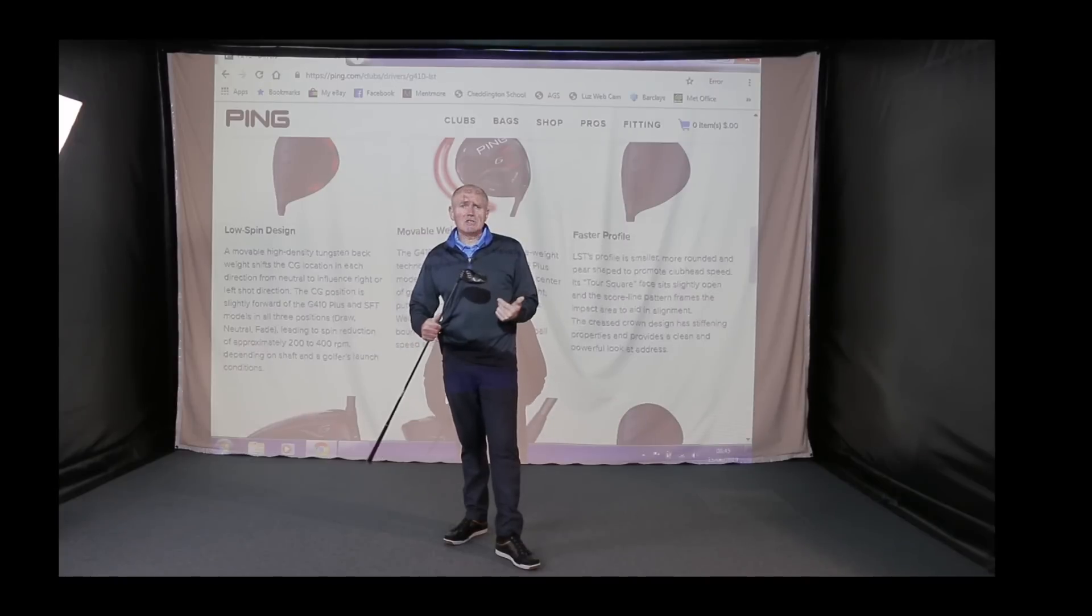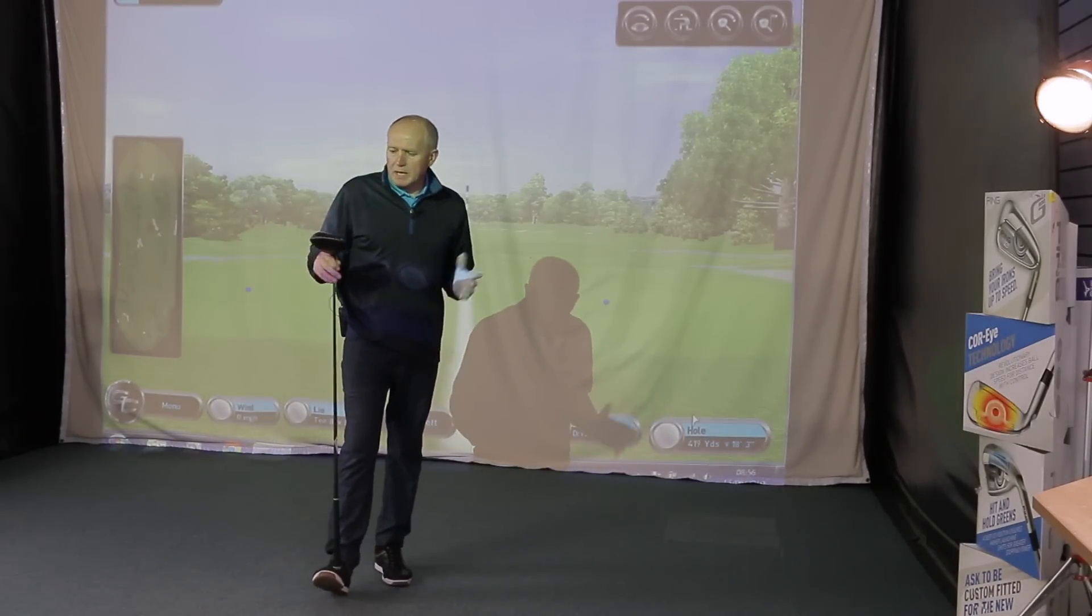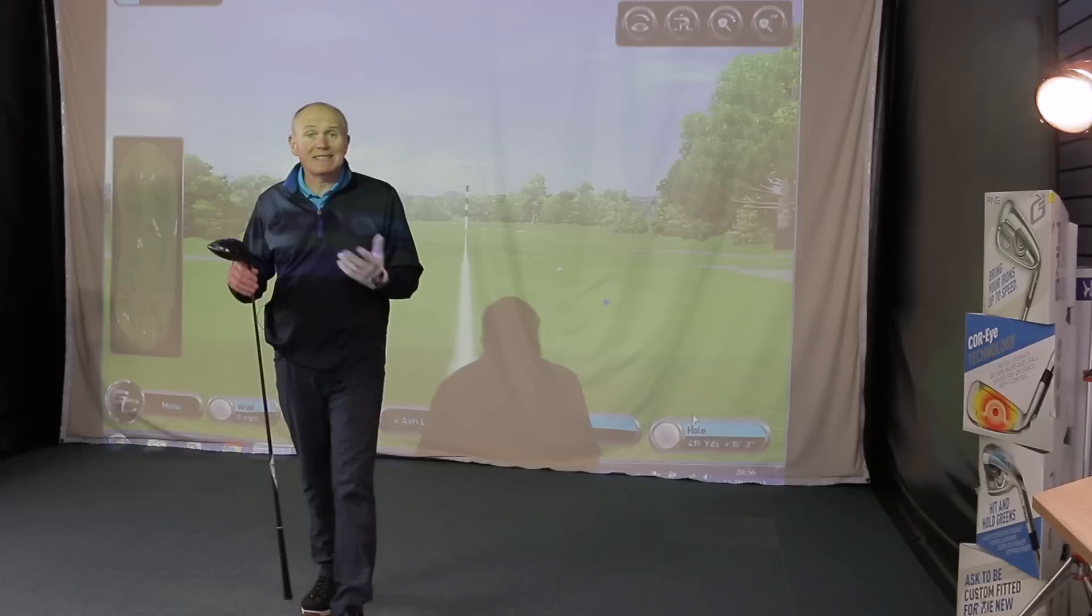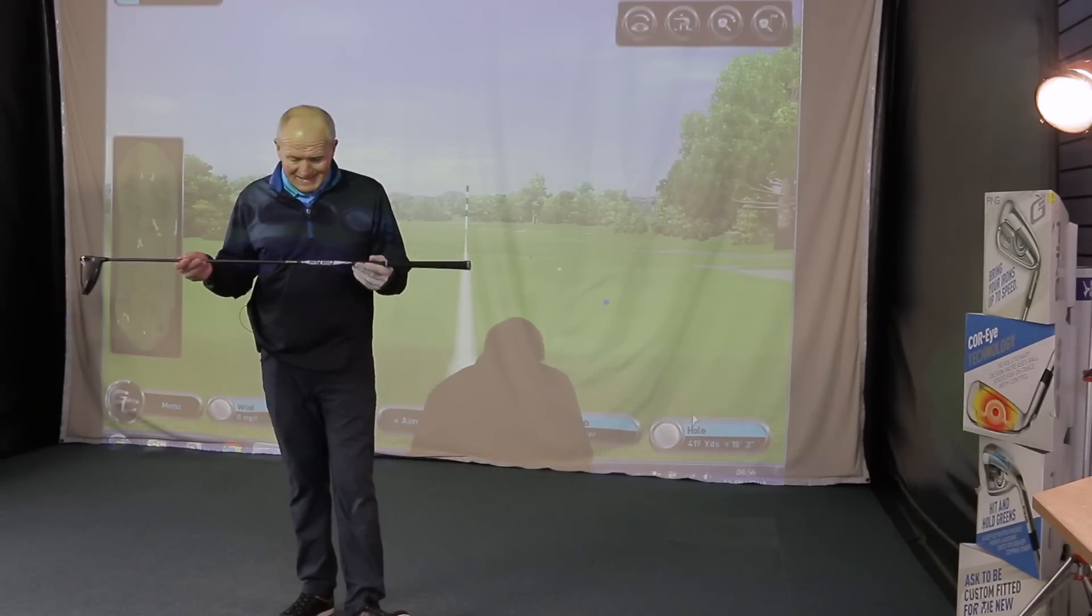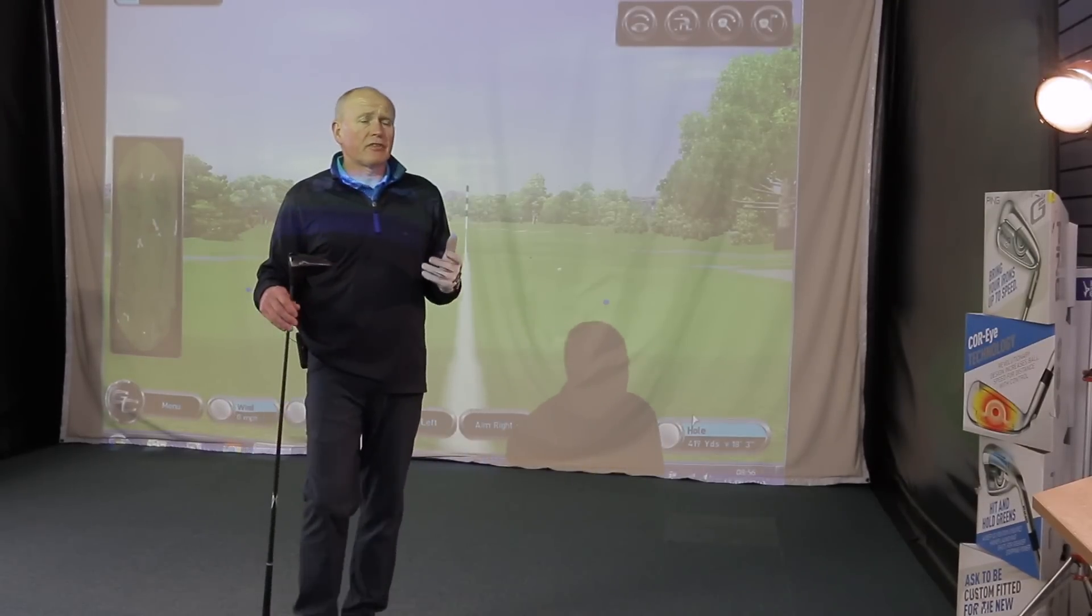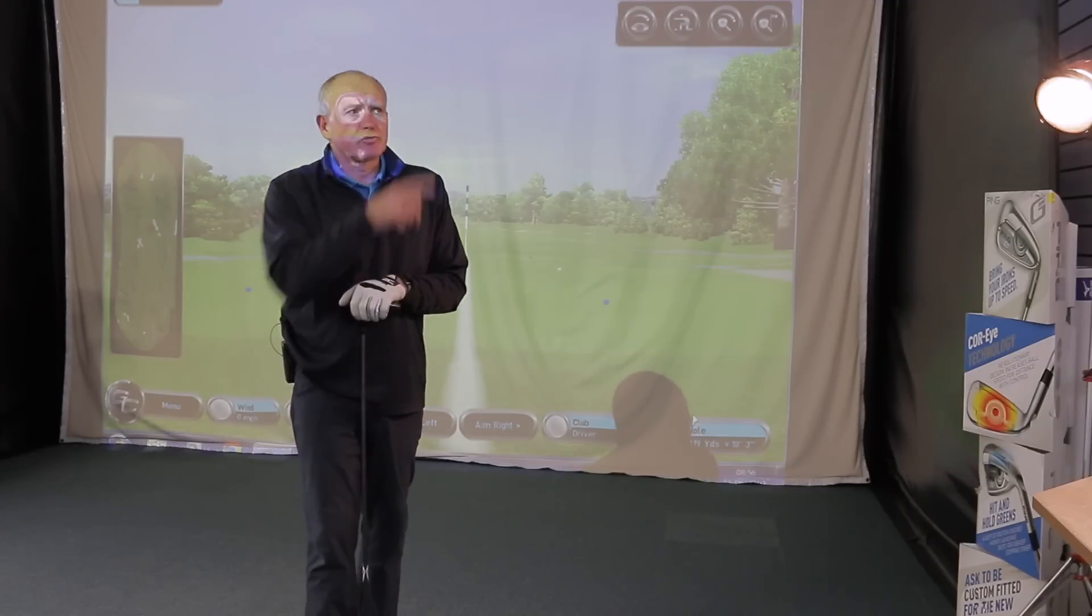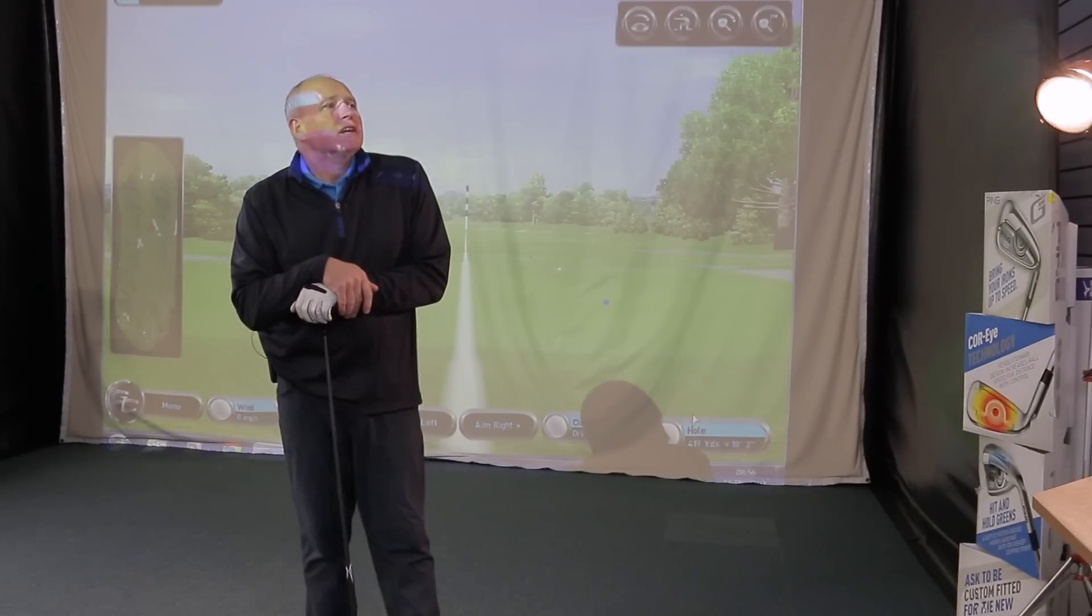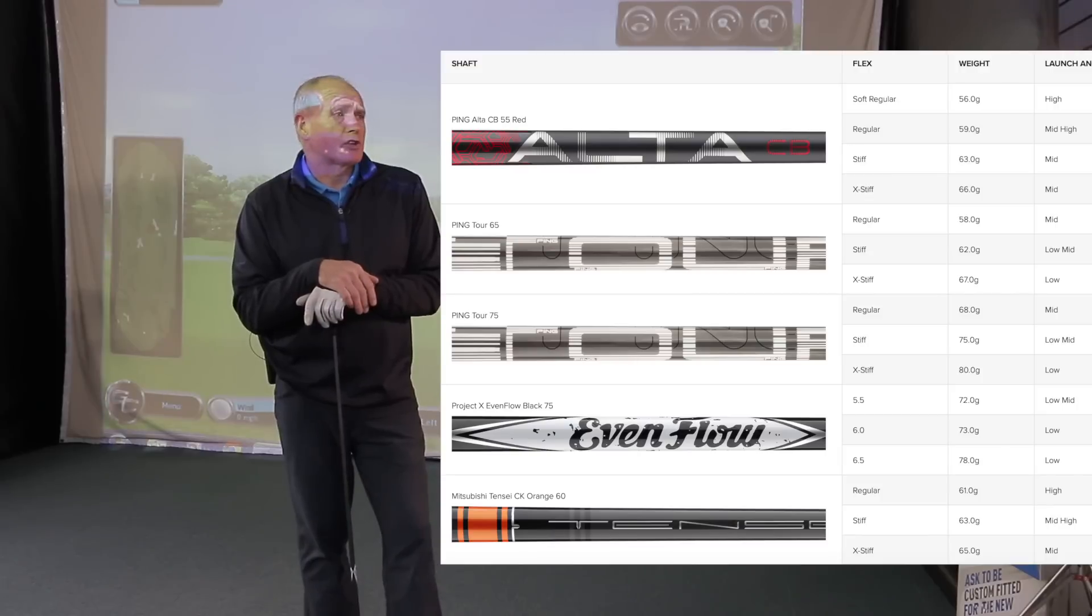So I'm just going to get this set up for you, get GC2 running, hit a few shots and see how we go. Okay everybody, let me tell you how I've set this one up. G410 LST set to 10.5 degrees with the Project X EvenFlow 6.0 in stiff. So pretty standard setup. Lots of different shaft options in the drivers these days. We've got the standard - I'm just reading off the wall here if you know what I'm looking at - we've got the Alta CB Red, we've got the 2G5 and 75.